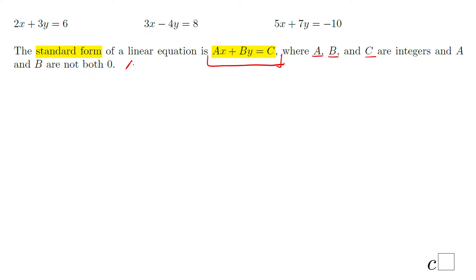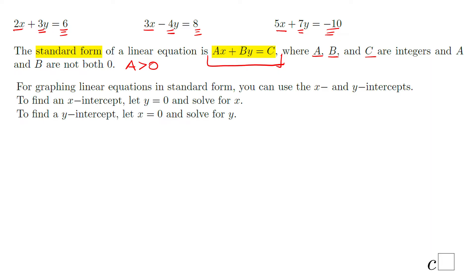Sometimes a has to be greater than zero — a positive number — and most of the time that's the case. For example, here a is 2, 8, 3, and 5; b is 3, negative 4, and positive 7; c is 6, 8, and negative 10.